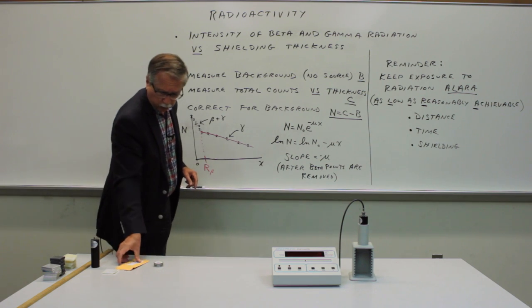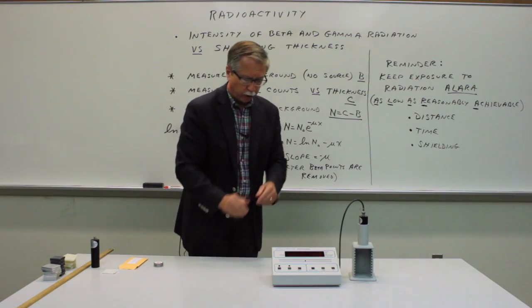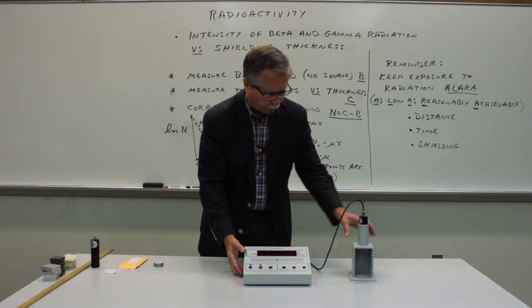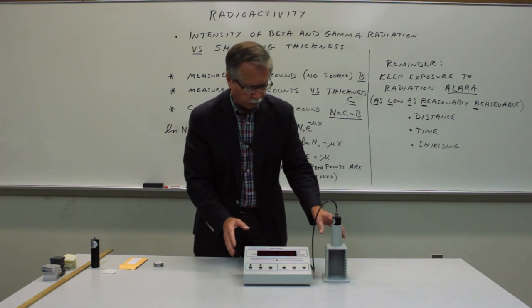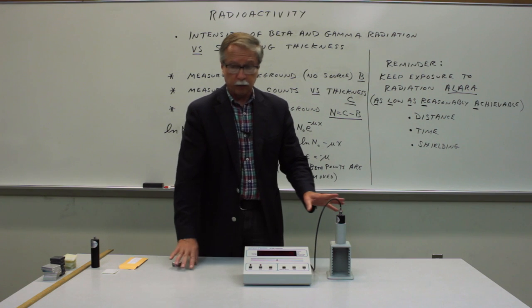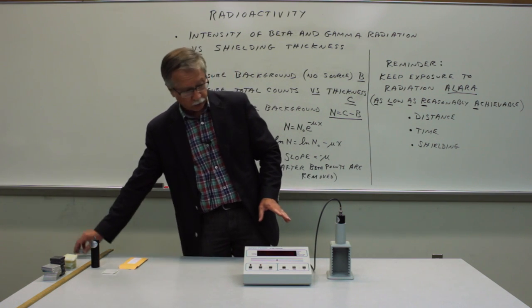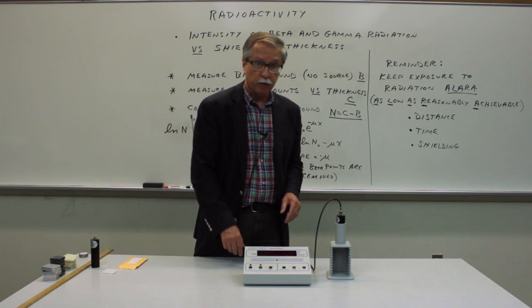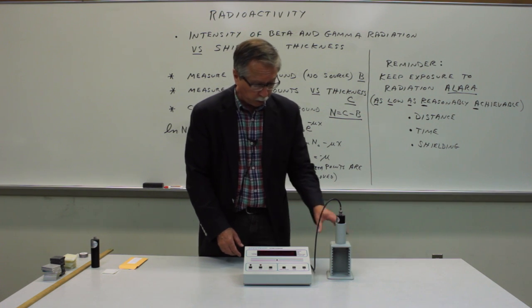So what we need to do is set up the counter as you've done before, set it to the proper operating voltage, and then count the background radiation with no source present. So keep the source far away from the instrument when you're measuring the background radiation.